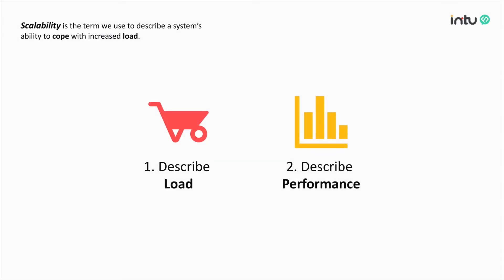So with the load parameter and the performance metrics, you can tell whether a system can cope with increased load or not. In other words, you can tell whether a system is scalable or not with respect to the chosen load parameter by looking at the performance metrics. Congratulations! Now you know how to assess the scalability of a system.